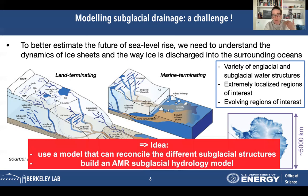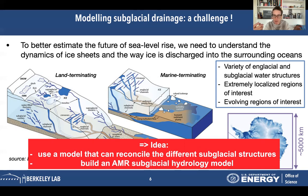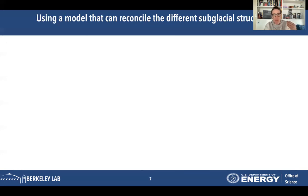The idea is to use a model that can first reconcile the differences among glacial structures — making sure we can take all of them into account in one way or another — and then build an adaptive mesh refinement subglacial hydrology model, which will enable us to deal with these discrepancies of length scales. I'm going to treat those two points one after the other, starting with the model that reconciles the different glacial structures.